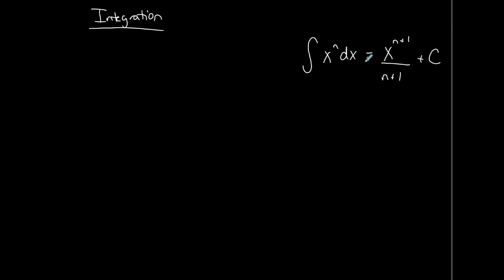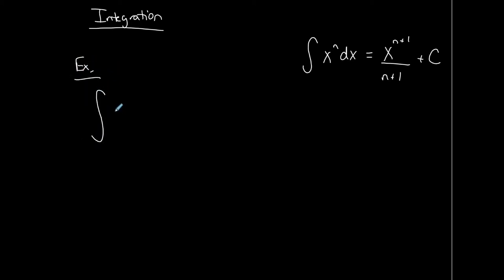So this is the reverse of a derivative. We call it finding the anti-derivative, or going through the process of integration. There's always a way to check to see if you integrated properly. Let me show you — let's do an example and integrate x to the third dx.